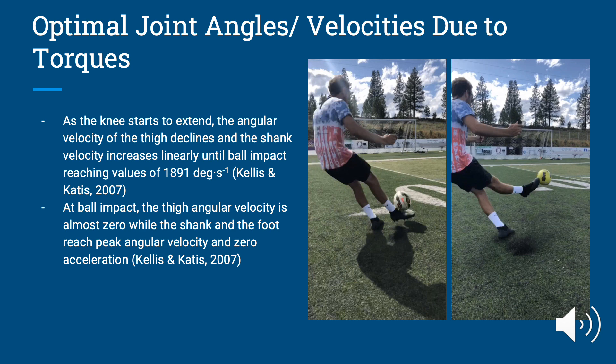In the last phase — still part of leg acceleration leading into the follow-through — as the knee starts to extend, the angular velocity of the thigh starts to decline, but the shank velocity increases linearly until the foot makes contact with the ball, reaching values of 1,891 degrees per second. As you can see in the picture, the thigh remains in relatively the same place as the thigh velocity is decreasing, while the shank is moving and its velocity is increasing linearly throughout that whole motion.